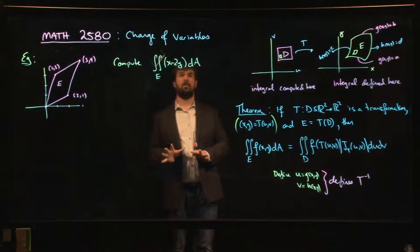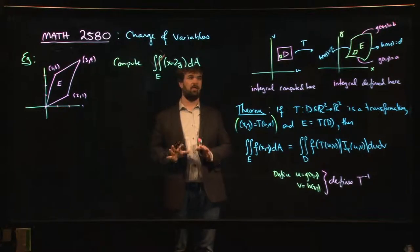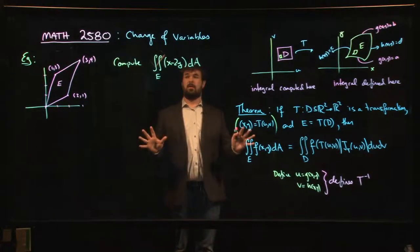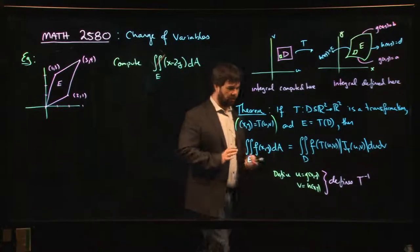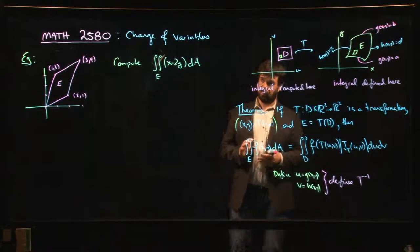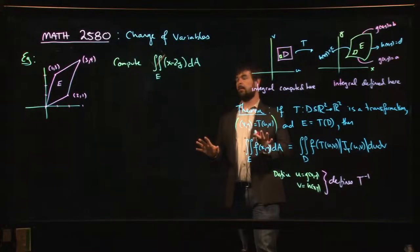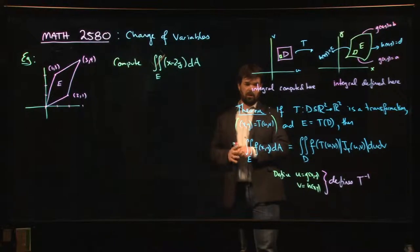Alright, so here's our first change of variables example. We're going to start with a case where the transformation is in fact already linear, so the derivative matrix will actually be just an ordinary matrix of constants. But we're going to work through the details anyway.